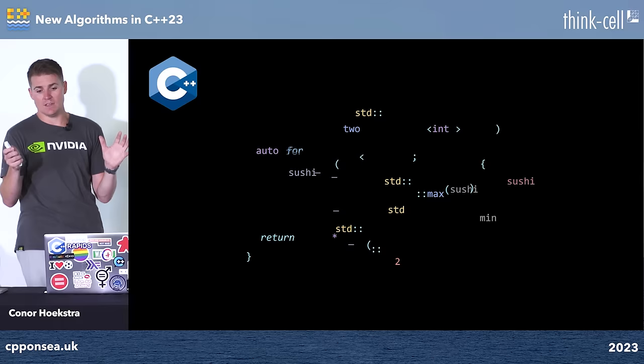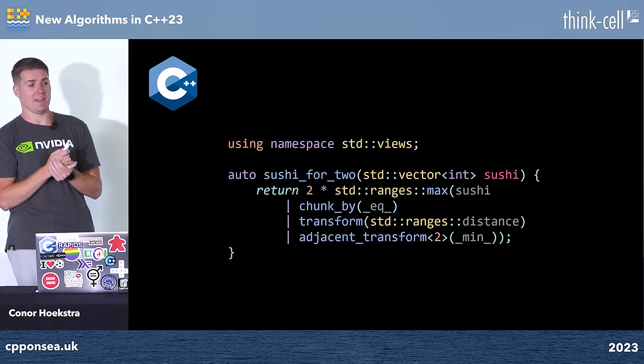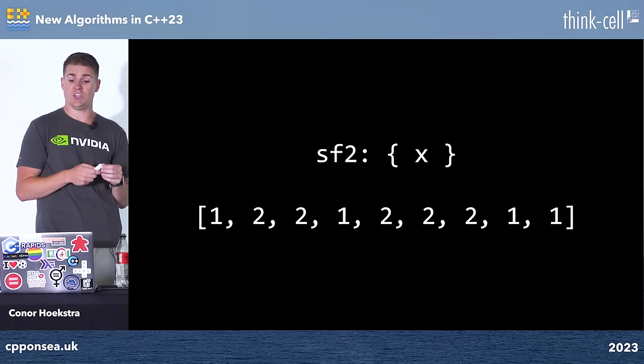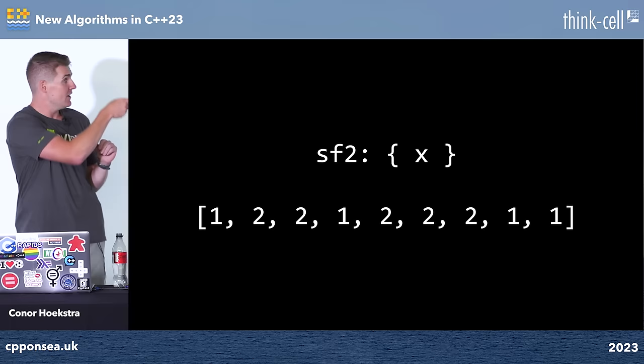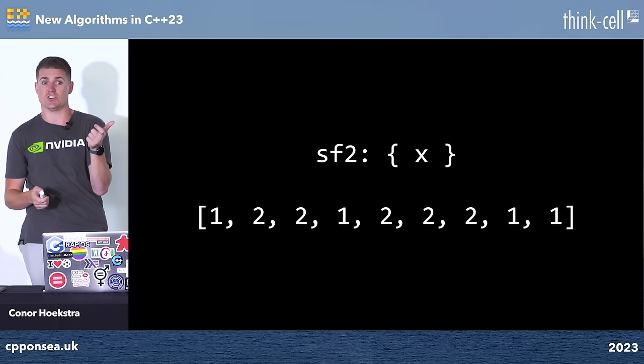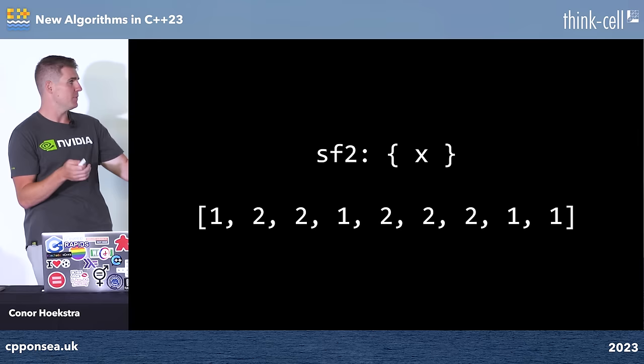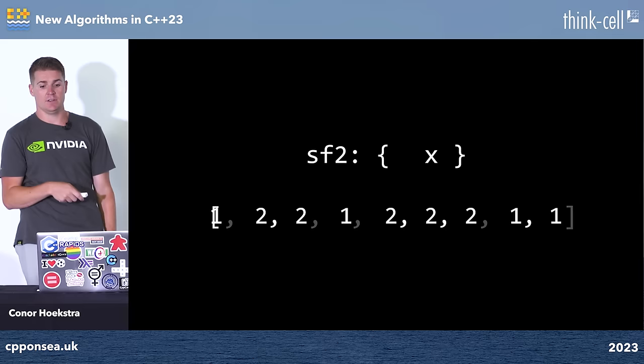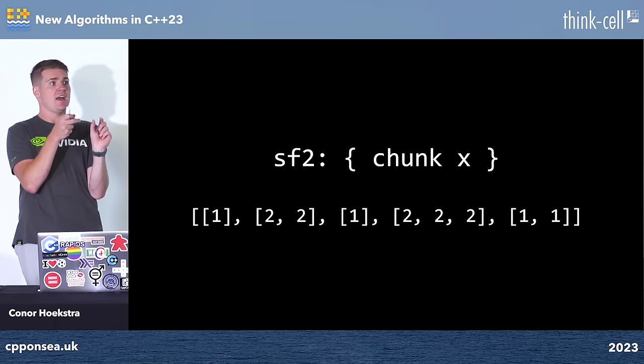This is now what's possible in C++23 — which makes me incredibly happy. Before showing the C++ solution, we'll solve it in Q, because I think it's almost easier to understand from an array language perspective first. In Q, 'SF2:{x}' defines a function where x is the argument. We want to first chunk the list into sub-lists of equal contiguous values.